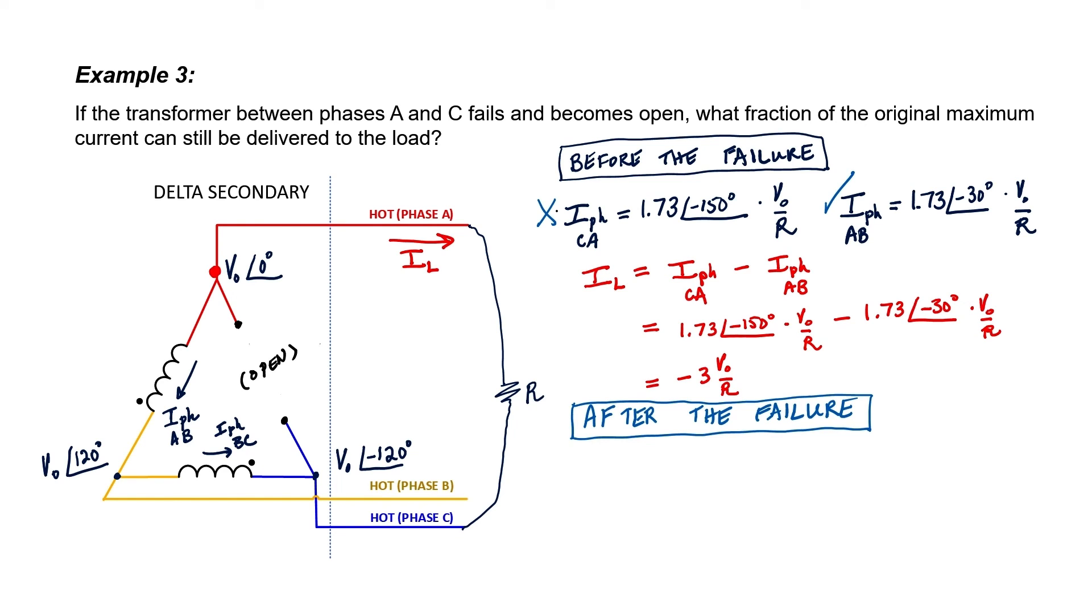If I again apply the Kirchhoff current law at node A, I have that the line current is now just negative the phase current AB.